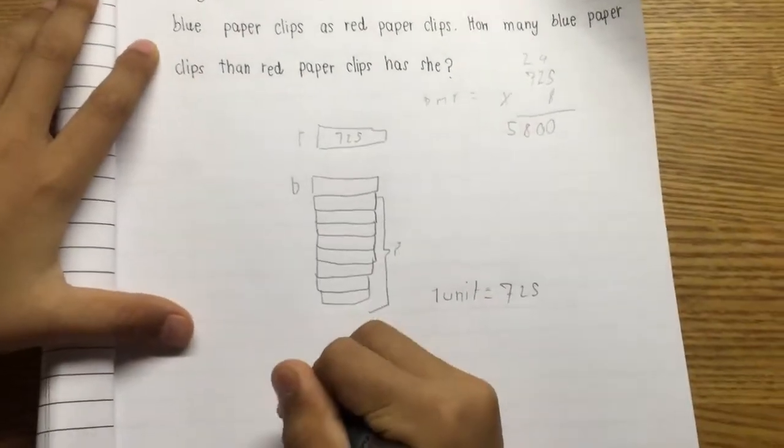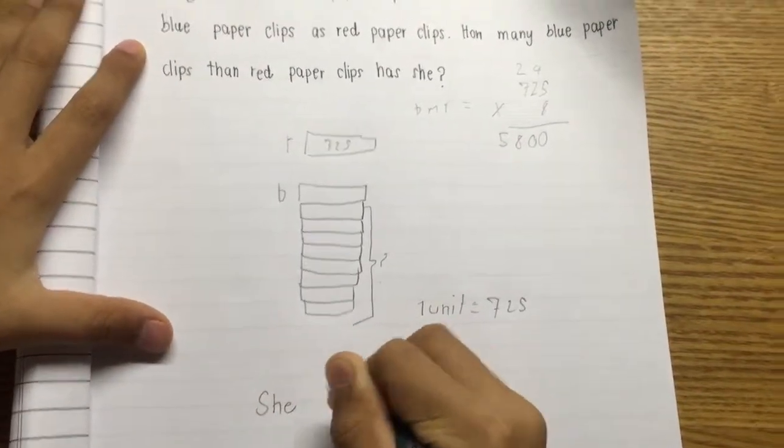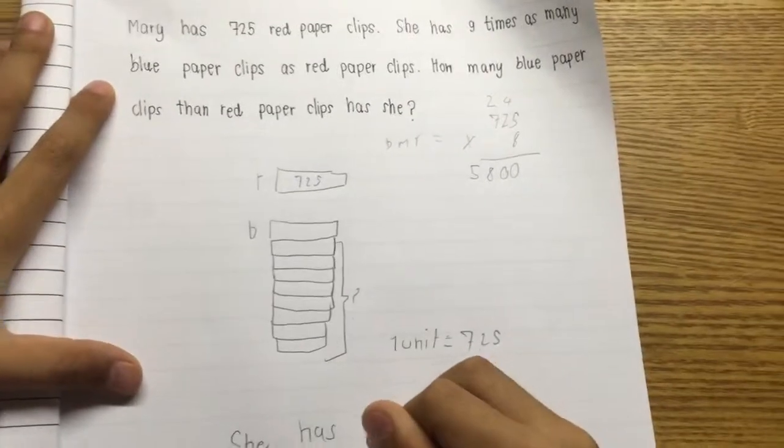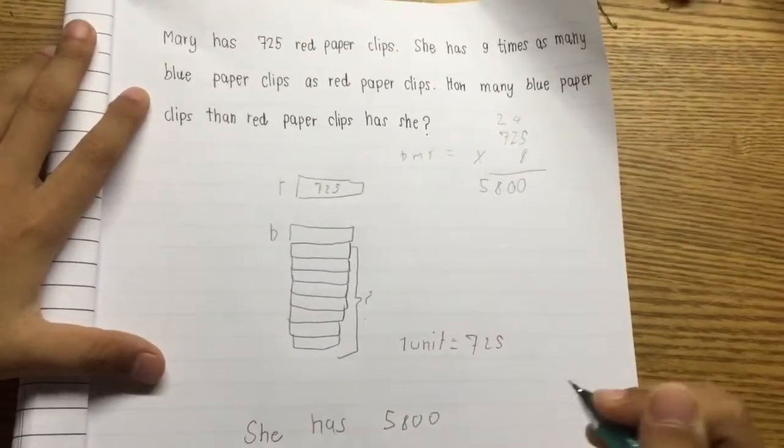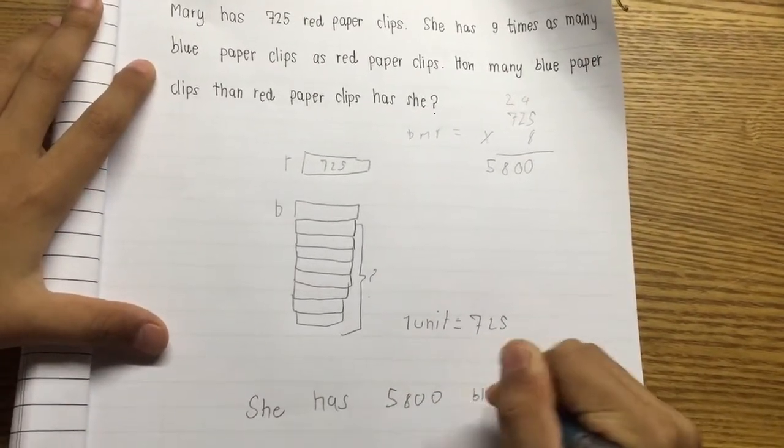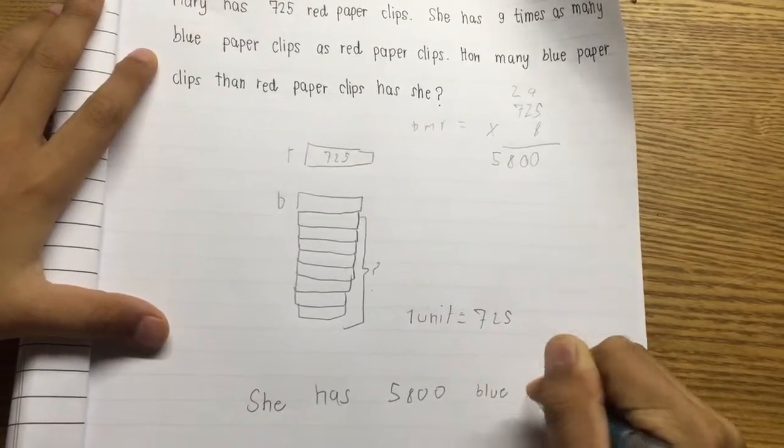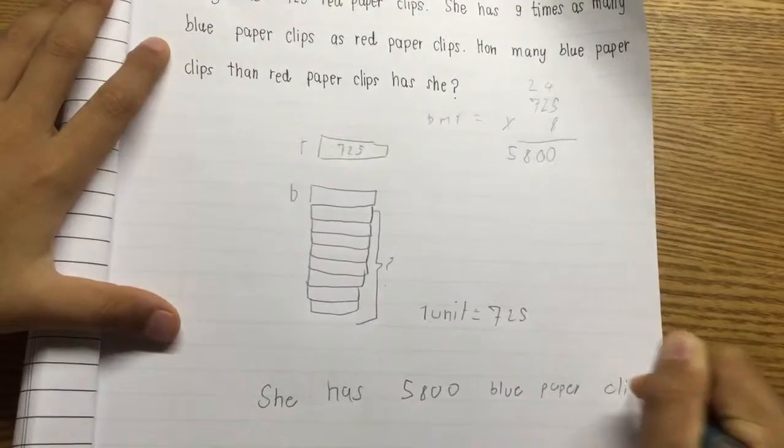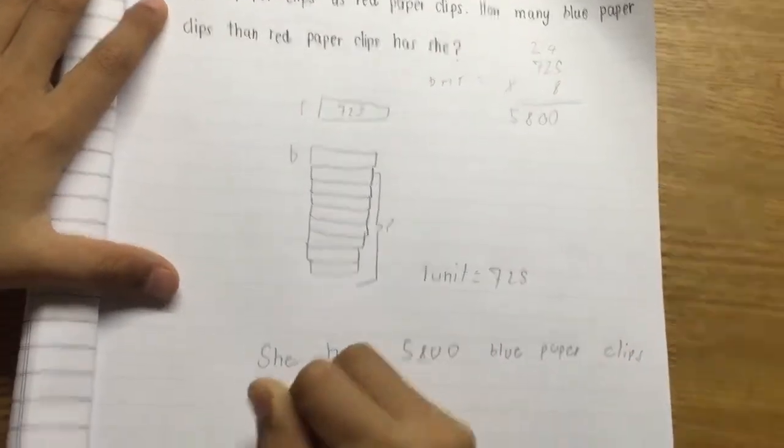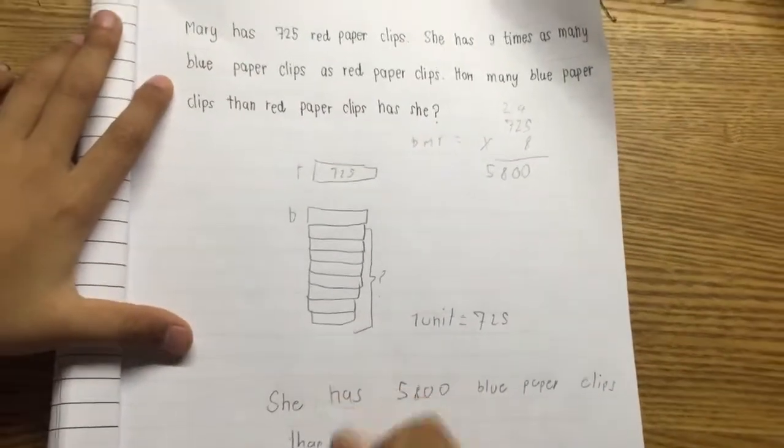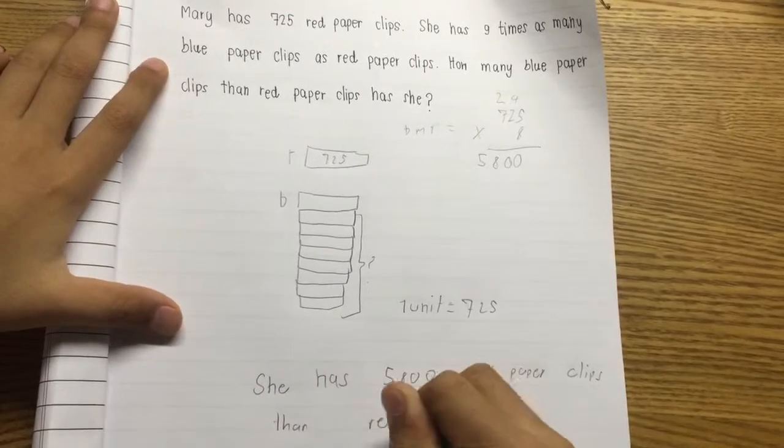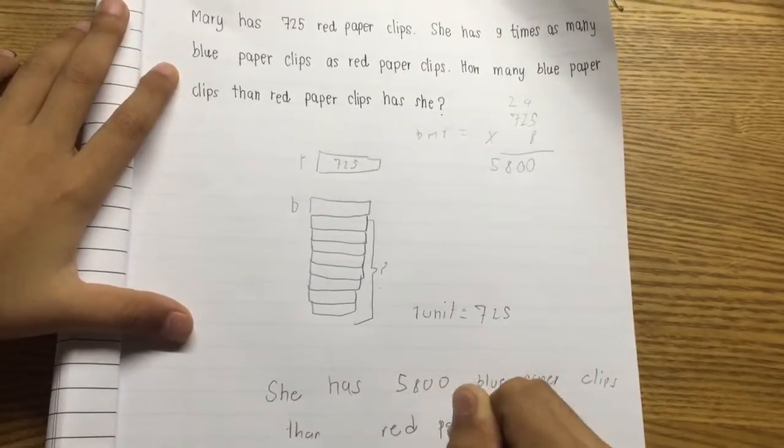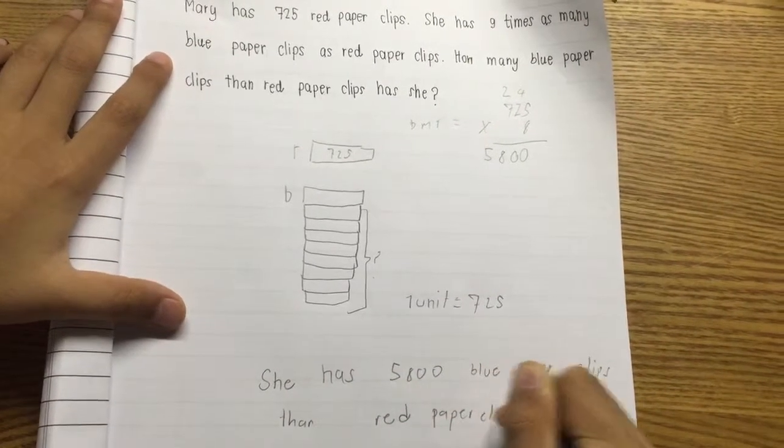She has, how does it say 800? So, 5,800. Blue paper clips then red paper clips.